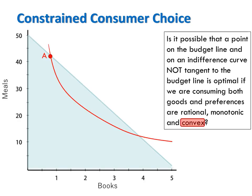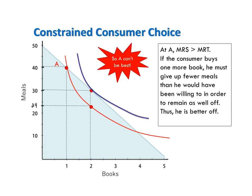So we know the optimal bundle will be on the budget line. Is it possible that a point on the budget line and on an indifference curve that is not tangent to the budget line is optimal, if we're consuming both goods and preferences are rational, monotonic, and convex? Could the optimal bundle be a bundle like A where the indifference curve is cutting through the budget line? No, it's not possible. At bundle A the indifference curve is steeper than the budget line, meaning in absolute value the slope of the indifference curve — the MRS — is greater than the slope of the budget line — the MRT.